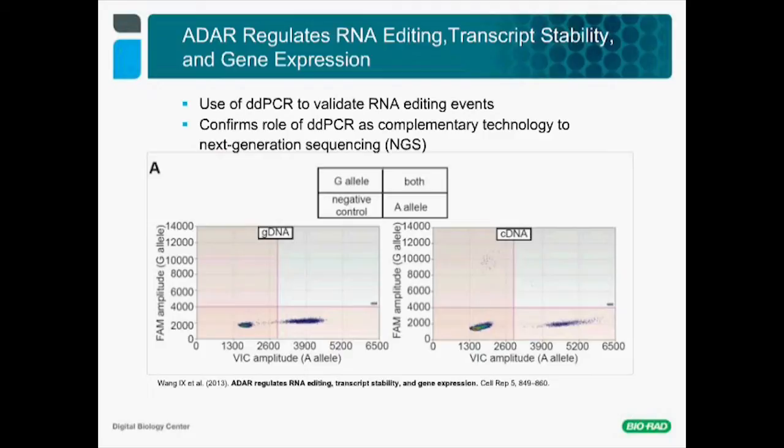What you see here are 2D plots for either genomic DNA or cDNA from biological samples. In the genomic DNA, you only see one type of allele—the A allele in VIC. But in the cDNA, you observe two types of allele: an A allele and a G allele. The G allele is very minority, as reflected by the low number of droplets.